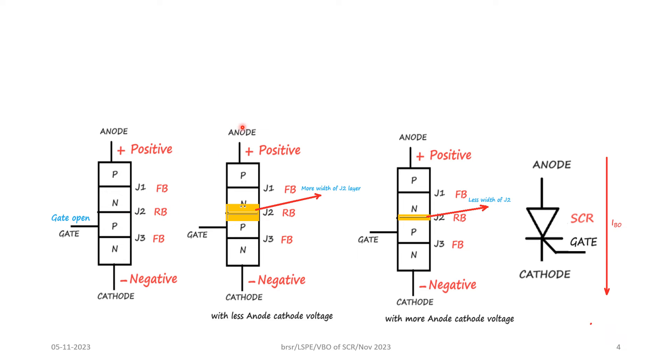If the voltage applied between anode cathode is less, the junction J2 which is already reverse biased will have more width. If the voltage between anode and cathode is increased, the width of the junction J2 decreases, and as the voltage is increased to a higher level, the stage occurs where the J2 junction completely vanishes.